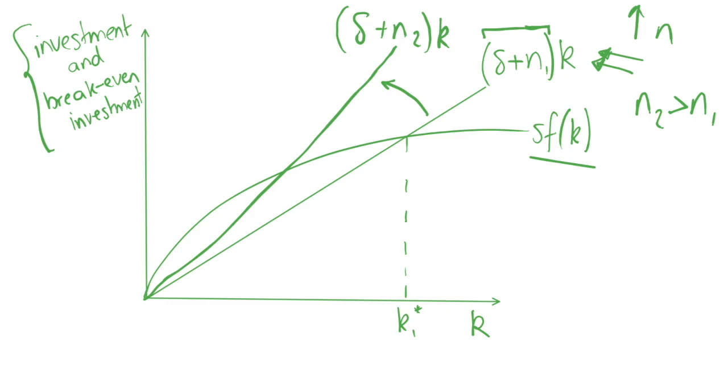Increasing n we get a steeper curve. As you can see, this intersects our investment line at a new point here, we'll call that k star 2, and this is obviously lower than the initial level of steady state capital.